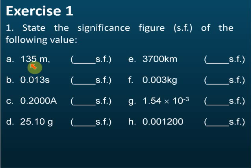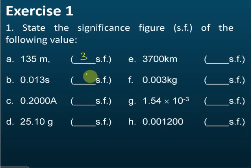A — what's the number of significant figures? A should be no problems, right? There are three significant figures. B — what's the number of significant figures for B? 2. Good.